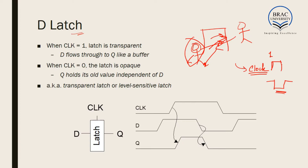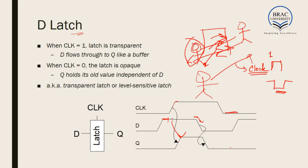The latch works in a similar way. When the clock is on, whatever the input is, it will appear at the output. For example, input is one but clock is off — the man wants to go to that side but cannot because the gate is off. Whenever the gate opens, the clock goes high and the output becomes one. When the clock goes to zero, the gate closes and the man cannot move.